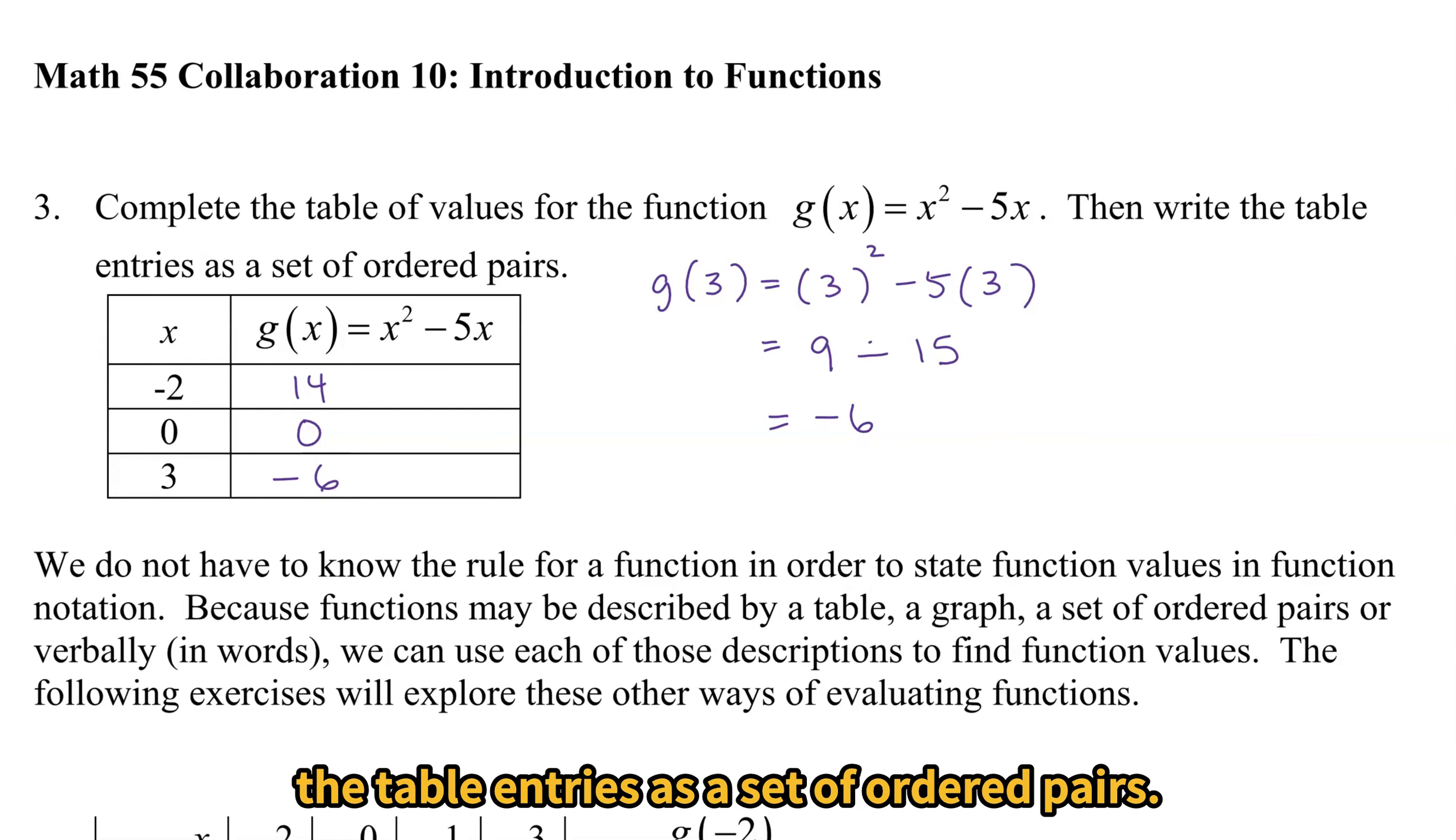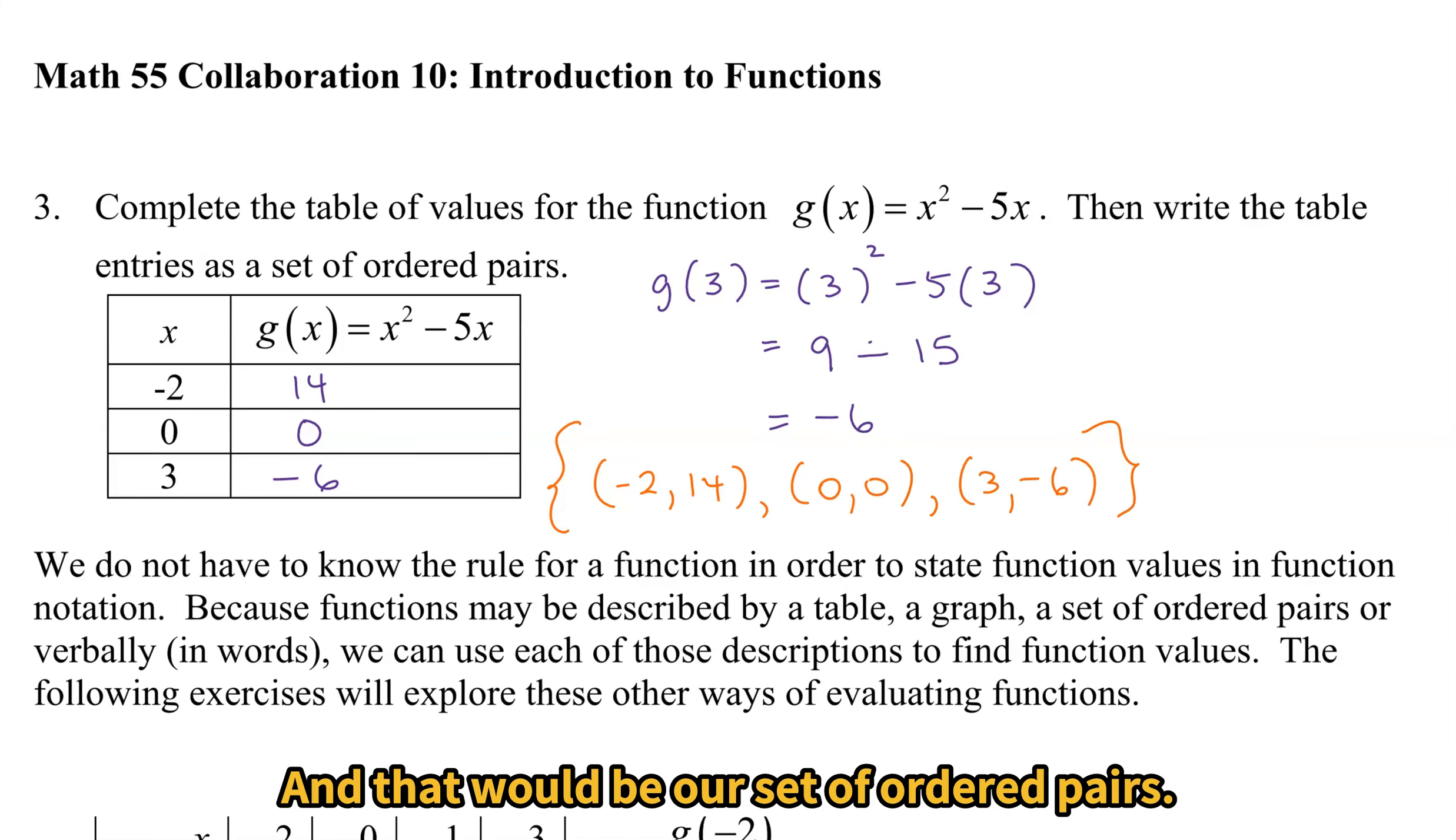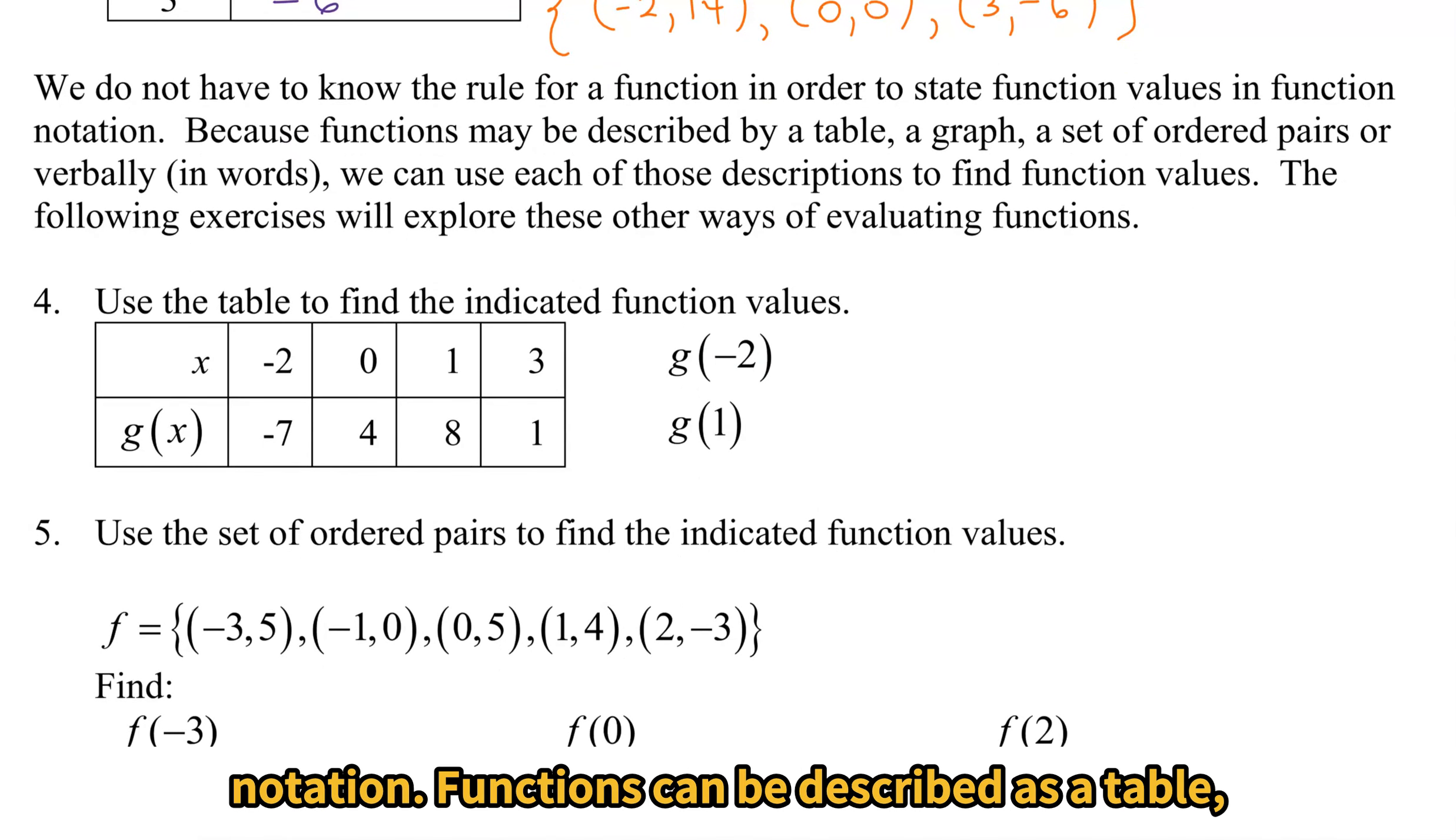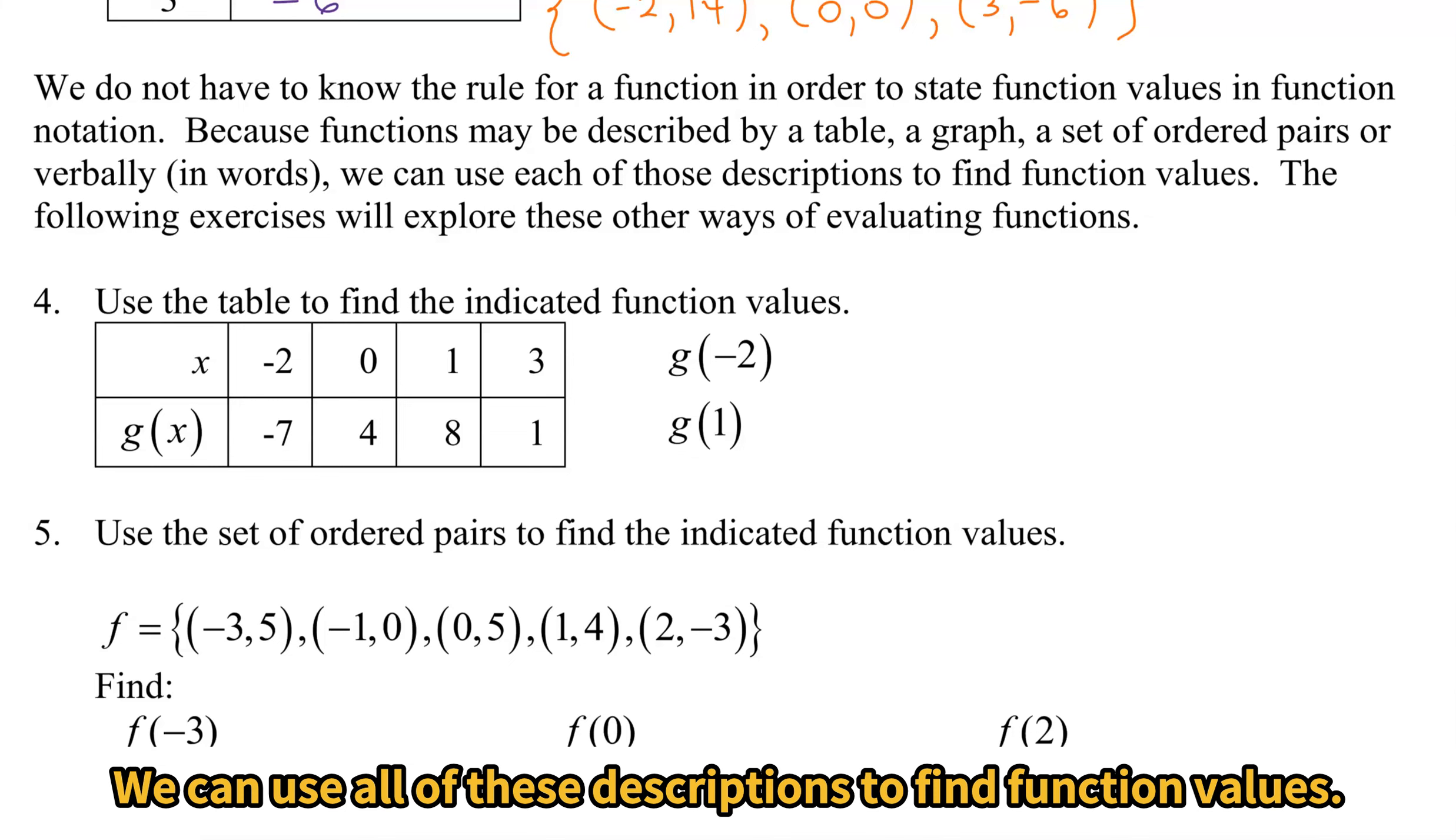Then it says write the table entries as a set of ordered pairs. So ordered pairs, set, we're going to have a curly brace. Ordered pair, we write (x, y). And we're going to correspond the x and the y together in the rows. And that would be our set of ordered pairs. We don't have to know the rule for the function in order to state the function values in function notation. Functions can be described as a table, a graph, a set of ordered pairs, verbally, or symbolically. We can use all of these descriptions to find function values.